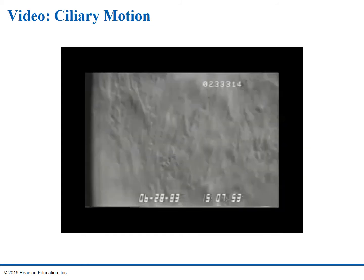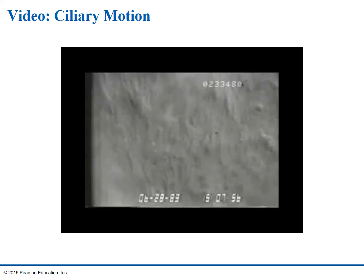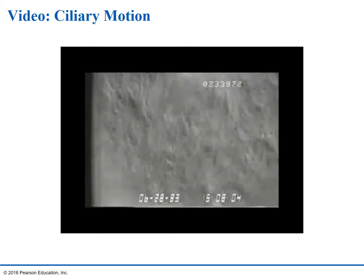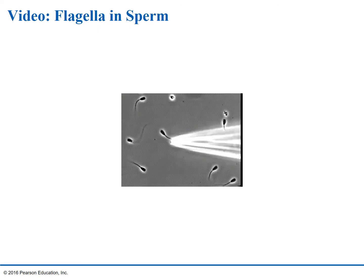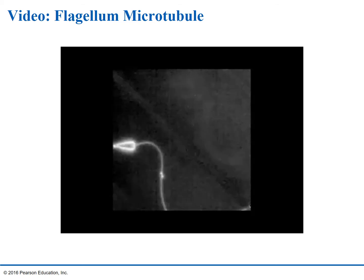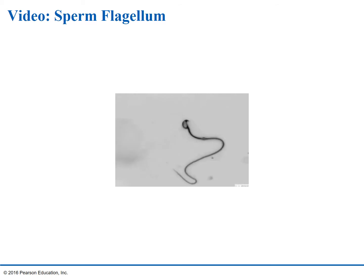Flagella and cilia bend to cause movement of either the cell or the surroundings. The bending uses energy derived from the hydrolysis of ATP. The video of ciliary motion looks like maybe water rushing over sand. Now let's look at flagella and sperm — you can see the flagella flips back and forth rapidly. Flagella are microtubule-based and it's off to the races.